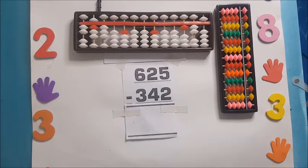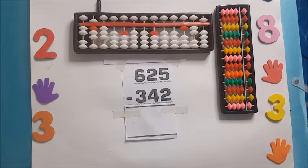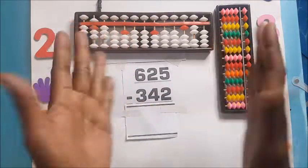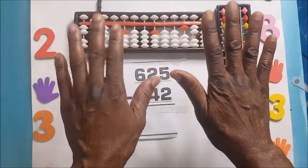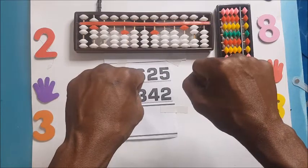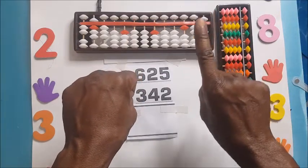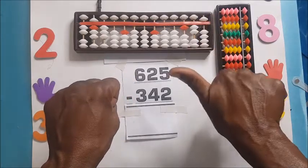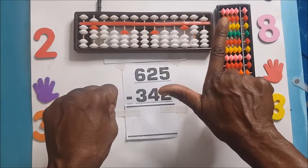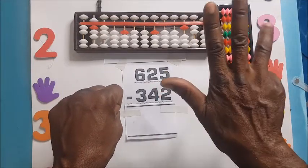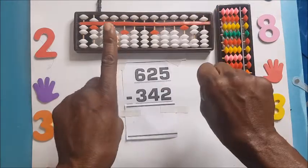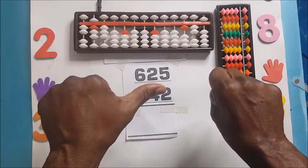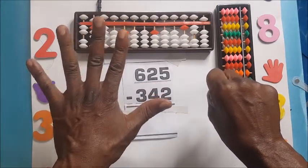Now we have learned that you turn your palm away from yourself, you hold your fist, that means zero zero. This is 1, 2, 3, 4, 5, 6. Five plus one is 6, 7, 8, 9, and then 10, 20, 30, 40, 50, 60, 70, 80, 90.